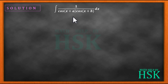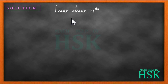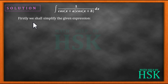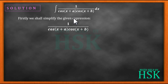Observing this integral, we see that it contains a complex term in the denominator — we cannot apply a simple formula directly. So the best approach is to simplify this expression so it can be integrated separately. We will multiply and divide the fraction by sin(a minus b).